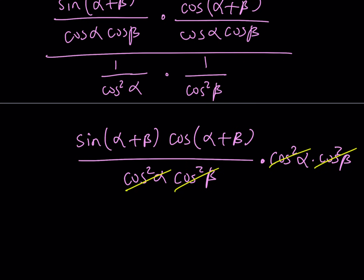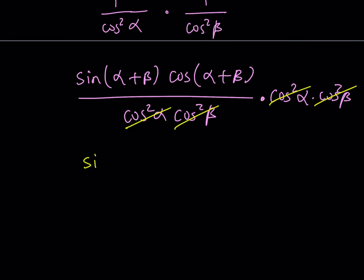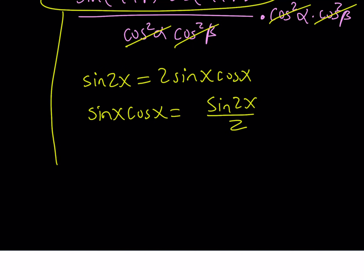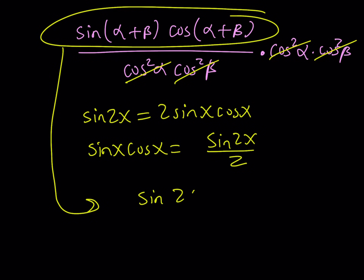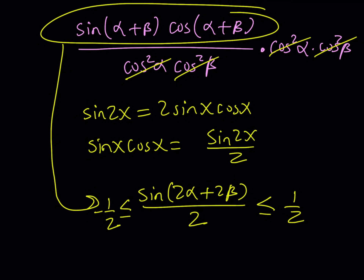Now this product gives us something nice. Recalling the formula for sine of 2x, which is 2 sine x cosine x, we have something that looks like sine x cosine x, so we can write it as sine(2x) divided by 2. This expression — sine(α+β) times cosine(α+β) — can be written as sine of 2(α+β) divided by 2. Since sine of any angle is always between negative 1 and positive 1, half of that will be between negative 1 half and positive 1 half. This proves that our expression is always between negative 1 half and positive 1 half.